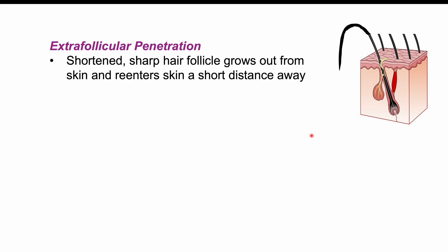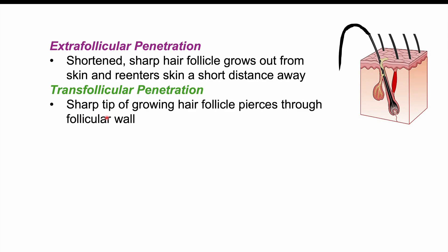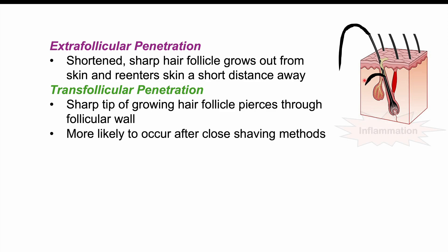Another way this condition can occur is through what we would call transfollicular penetration. This is where a sharp tip of a growing hair follicle pierces through the follicular wall. If we continually cut the hair follicle shorter and shorter, the end of the hair follicle becomes sharp, and instead of growing out through the skin, it actually grows into the skin, penetrating through the follicular wall into the underlying skin and causing inflammation. This is more likely to occur especially with close shaving methods.